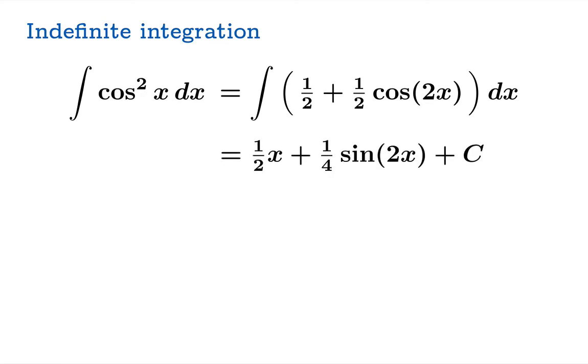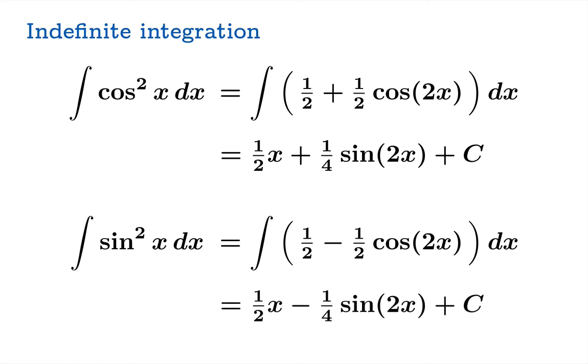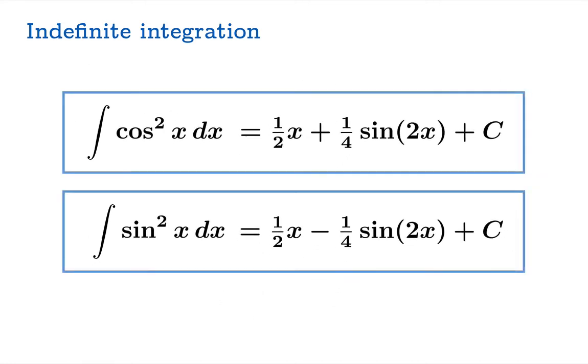Antiderivative of 1/2 is (1/2)x. Antiderivative of cosine is sine. We have to take into account the chain rule because of the 2x on the inside. So you get this antiderivative right here. Cos²(x)'s antiderivative is (1/2)x + (1/4)sin(2x). And similarly, the antiderivative for sin²(x) can be found. And we get this formula.